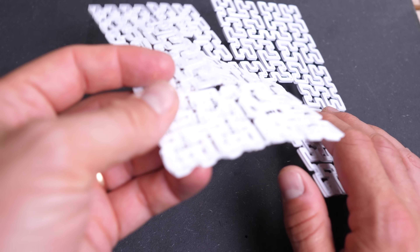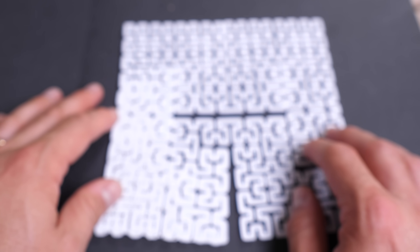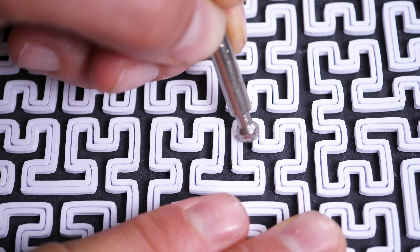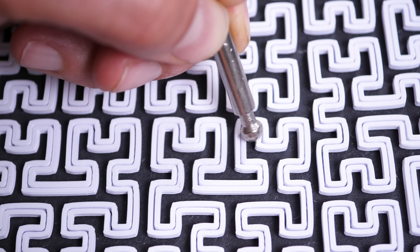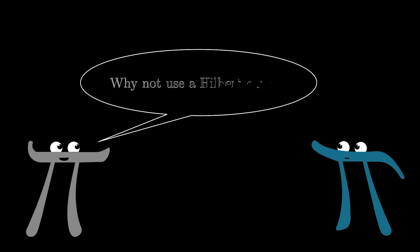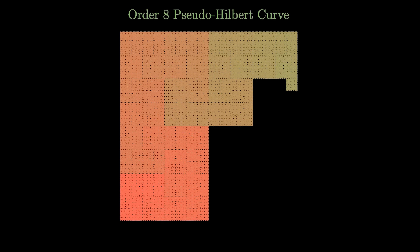My first attempt to print it actually failed because part of the print came unstuck from the print bed, and because it was unstuck it was pushed around by the print nozzle whenever it came by, causing more and more of it to become unstuck - the unstuckness spread out into this region. That might seem like a mundane observation, but it relates to a really interesting property of the Hilbert curve: it has really good locality. It's a fascinating subject, but 3Blue1Brown did such a good job of it already - link to that video in the description.